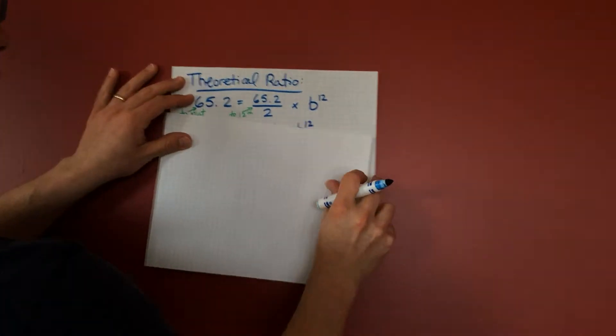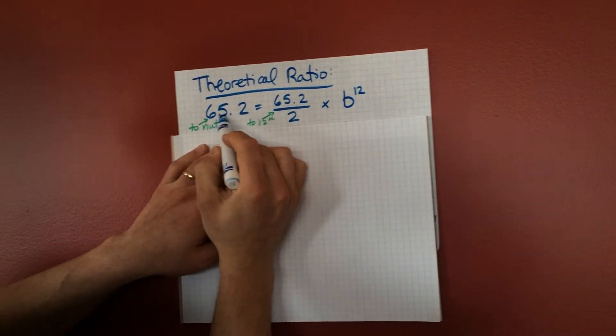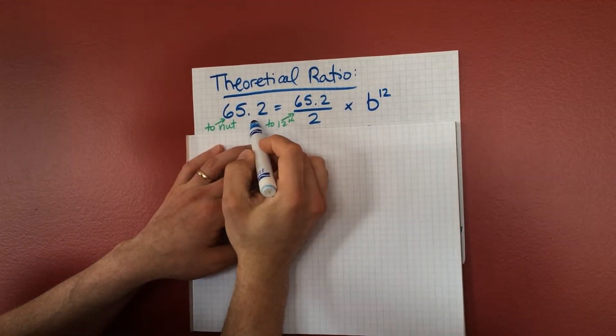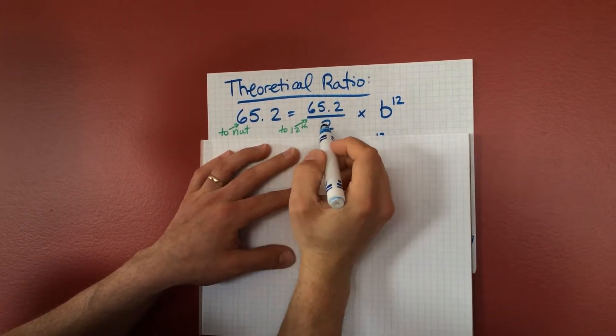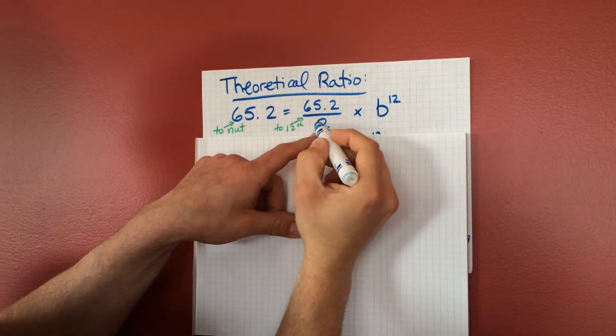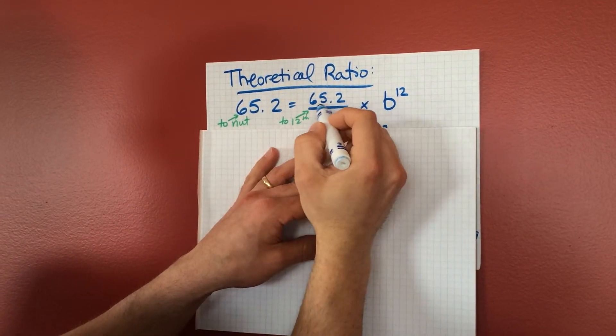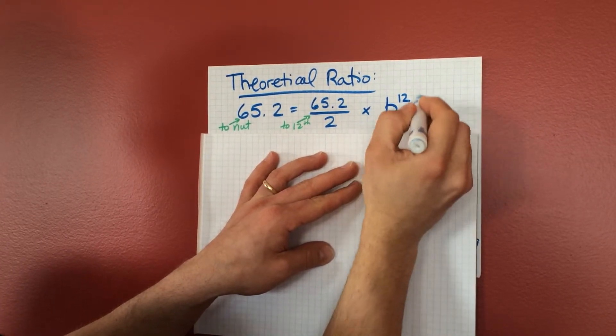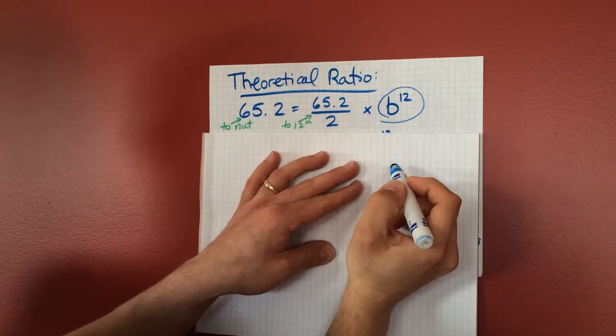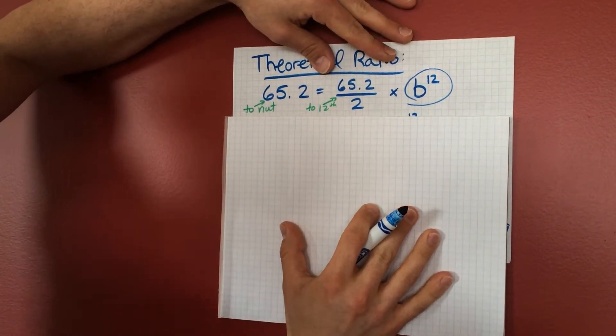So this is back to the guitar lengths again. So the distance to the nut is 65.2. That's from the bridge to the nut, from the very bottom to the very top. And we want it to be equal to the distance to the 12th fret times some ratio 12 times over. So you take your 12th fret distance and you're going to increase it by multiplying by a sum ratio 12 times. And I'm calling that ratio b. It's going to be the base of our exponential function.